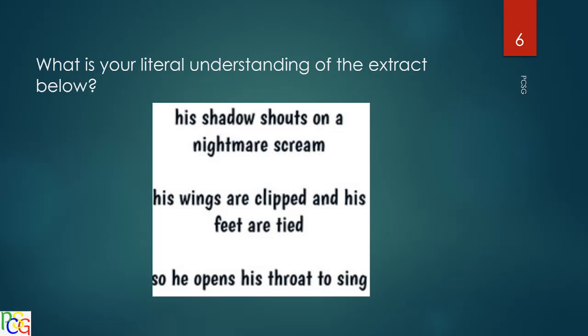In that extract, it says his wings are clipped and his feet are tied, and it opens its throat to sing. When you relate 'wings' to a bird, your prior knowledge tells you this is speaking about a bird that is maybe injured or restrained. That is a literal understanding — what the words mean to you based on prior knowledge.